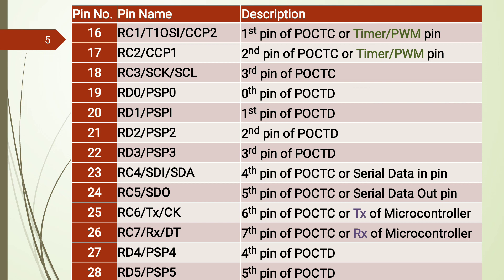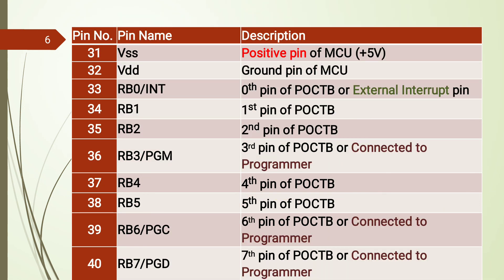Port D operates in PSP mode along with basic I/O. The ground signals are present, and RB0 is the external interrupt pin used for detection of external interrupts — an interrupt is detected with the setting of the INTF flag. Pins PGM, PGC, and PGD are connected to the programmer during in-circuit programming. This covers the pin configuration and pin specifications of PIC16F877A microcontroller.